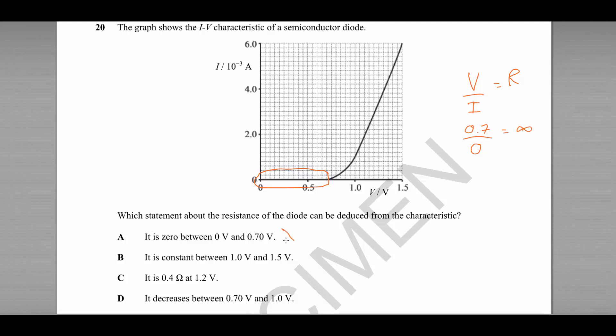Statement B: the resistance is constant between 1 volt and 1.5 volts. Now at first glance this may look to be true. Remember the gradient of this line is equal to the inverse of the resistance.